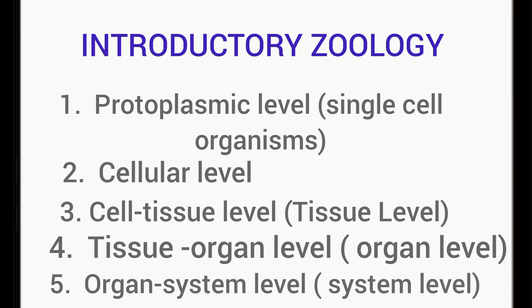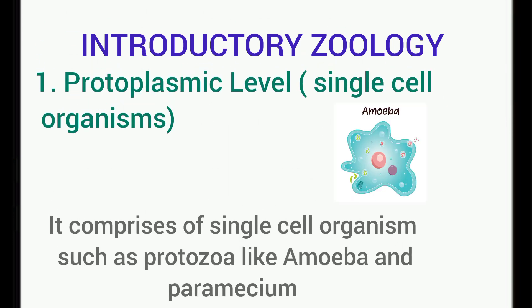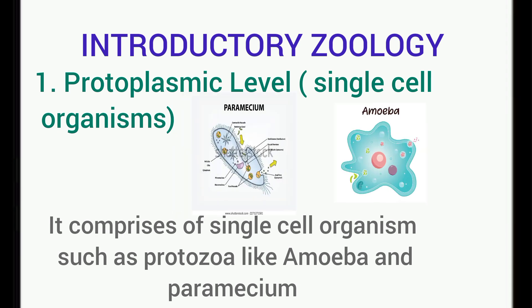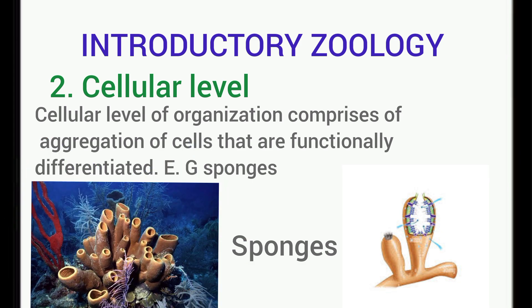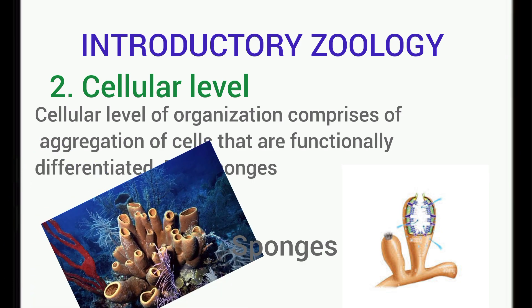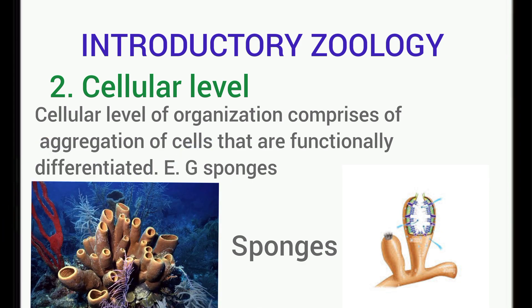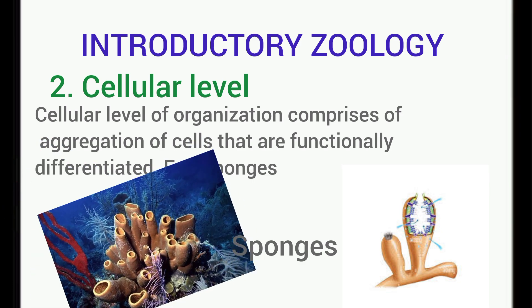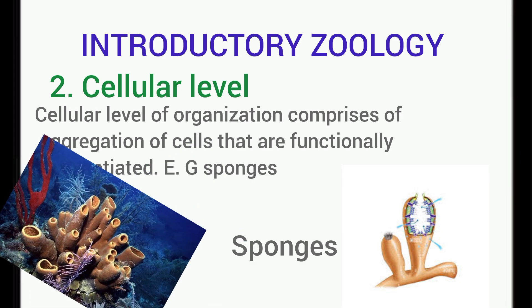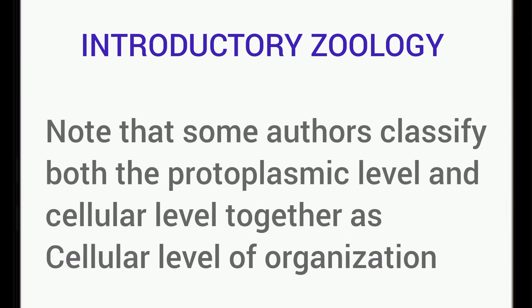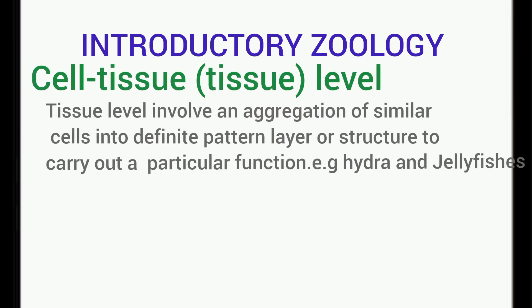The protoplasmic level of organization involves single-celled organisms. Division of labor is evident such that some cells are concerned with nutrition and others with reproduction. This level of organization is found in organisms such as the sponges. It should be noted that the cellular level of organization and the protoplasmic level of organization are collectively regarded as the cellular level of organization by some authors.